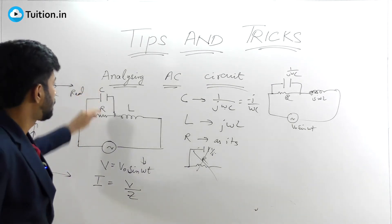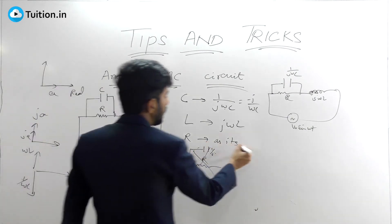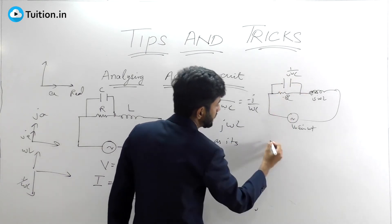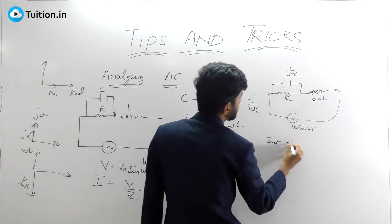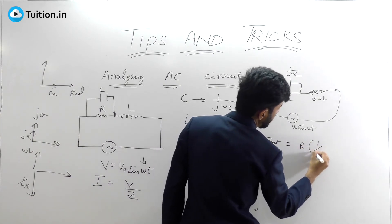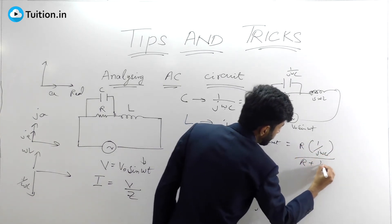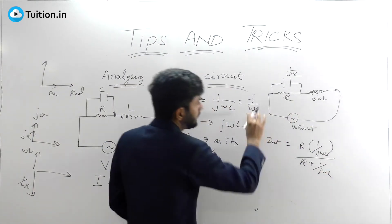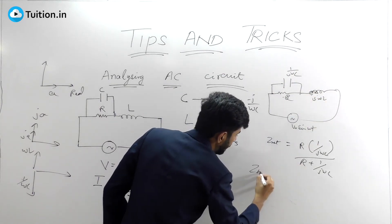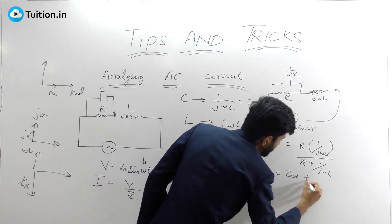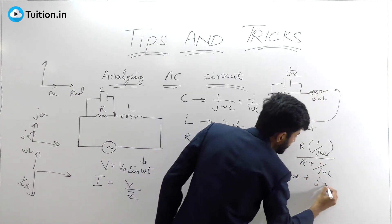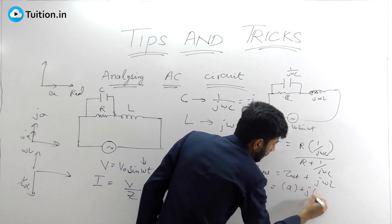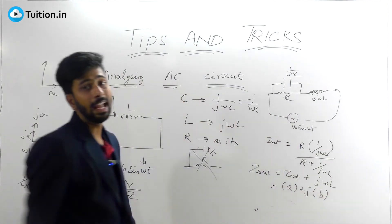Now you'll have to calculate the net impedance. You have R and 1/jωC in parallel, so Z_net in this part is R × (1/jωC) divided by R + (1/jωC). And if you need the entire impedance, Z_total, that will be Z_net plus jωL. You simplify this and you'll get something in the form A + jB.